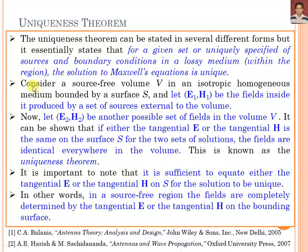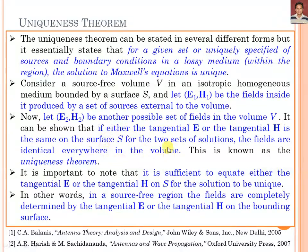To understand the uniqueness theorem, we consider a source-free volume V in an isotropic homogeneous medium bounded by surface S. Let E1, H1 be the fields inside it produced by sources external to the volume. Let E2, H2 be another possible set of fields in volume V. It can be shown that if either the tangential electric field or tangential magnetic field is the same on surface S for both sets of solutions, then these fields are identical everywhere in the volume.